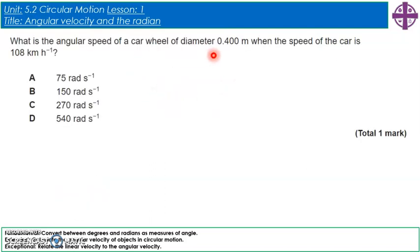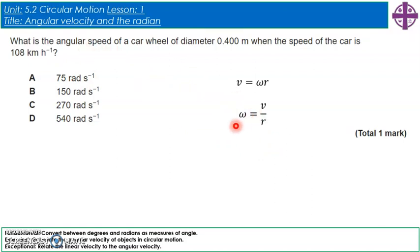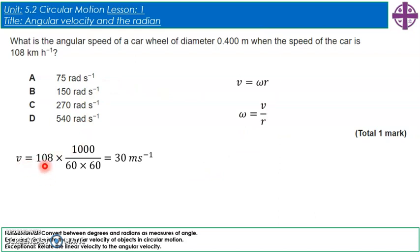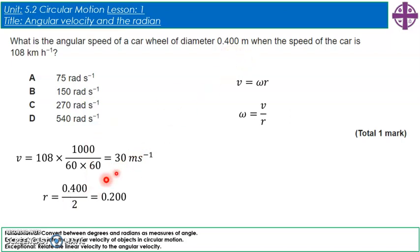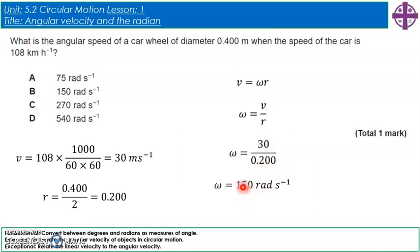What is the angular speed of a car wheel of diameter 0.400 m when the car's speed is 108 km/h? Using v = omega × r, rearranged to omega = v/r. Convert: v = 108 × 1000 / 3600 = 30 m/s; radius = 0.4/2 = 0.2 m. Therefore omega = 30/0.2 = 150 radians per second. Answer: B.